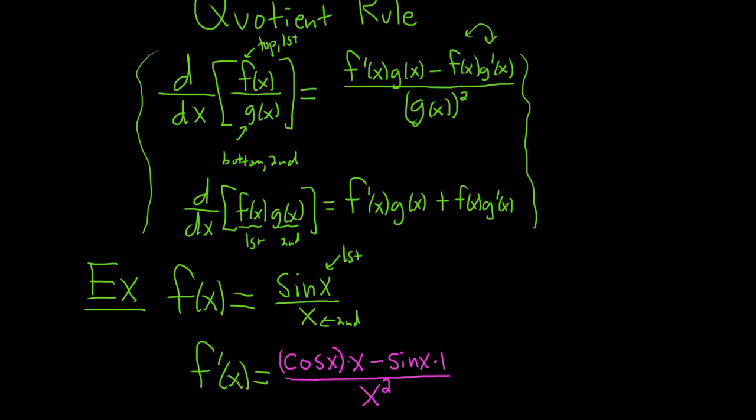Let's go over that again. So it's the derivative of the top, which is cosine, times the bottom, which is x, minus the top, which is sine, times the derivative of the bottom, which is 1. All over the bottom squared. The last thing to do is maybe rewrite this, make it look a little bit better.